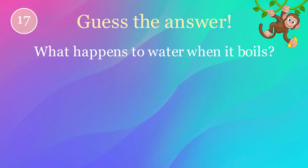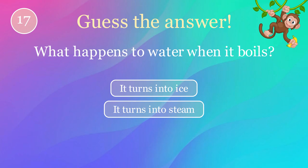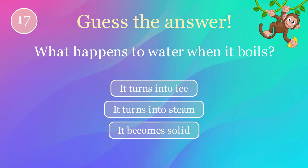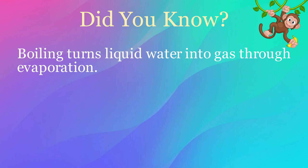What happens to water when it boils? Options: it turns into ice, it turns into steam, it becomes solid. The correct answer is it turns into steam. Here's an interesting fact: boiling turns liquid water into gas through evaporation.